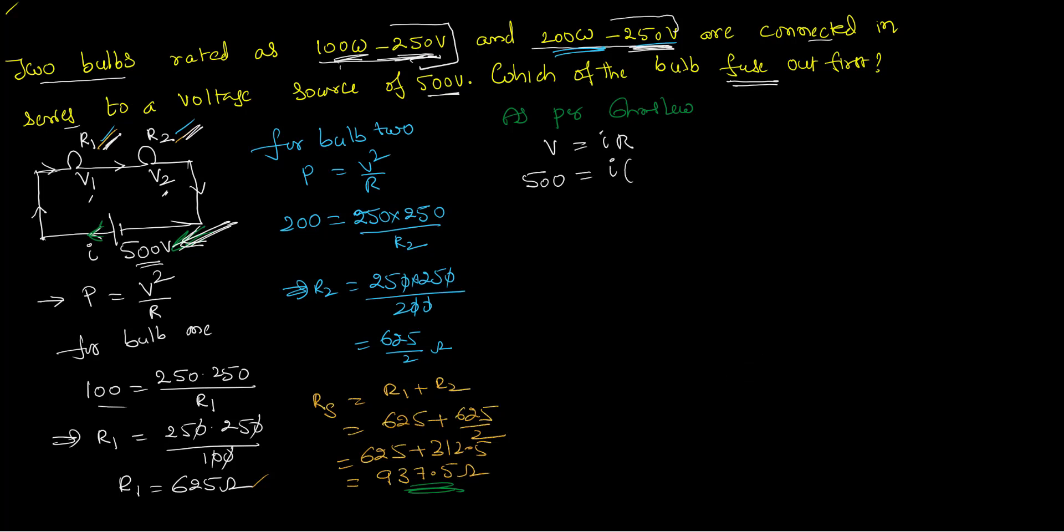I have to calculate. R value is the series effective resistance that we have calculated as 937.5. Then the I of that circuit is 500 by 937.5 and if you calculate it comes up approximately as 0.533 amperes.